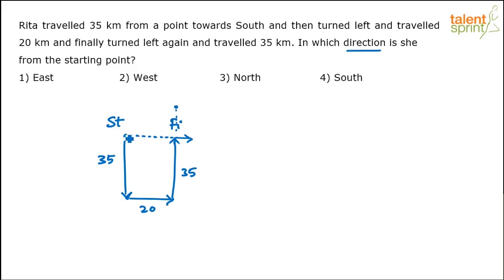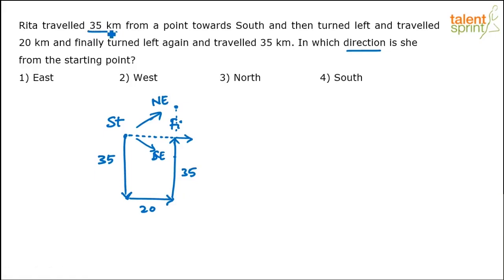In that case, where is she from the starting point? She is in the northeast direction. If she is traveling only 30 kilometers, she will stop short, so she would be in the southeast direction. That is the reason distances are also important. So with 35-20-35, she will be exactly in the east direction.